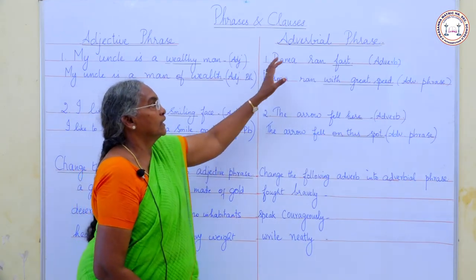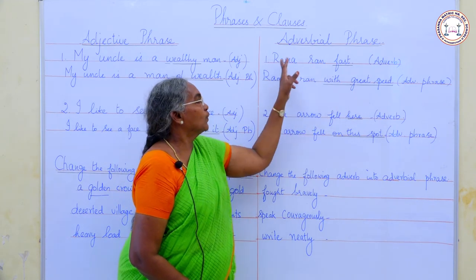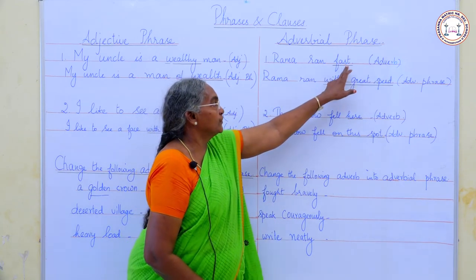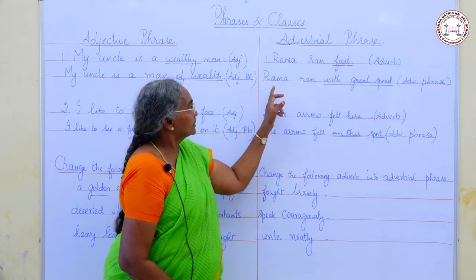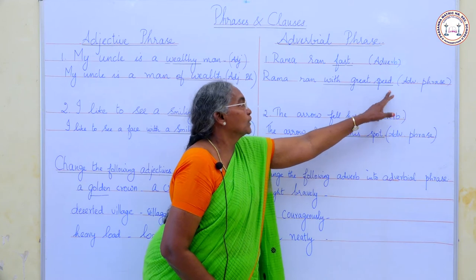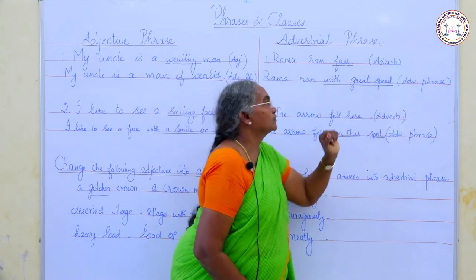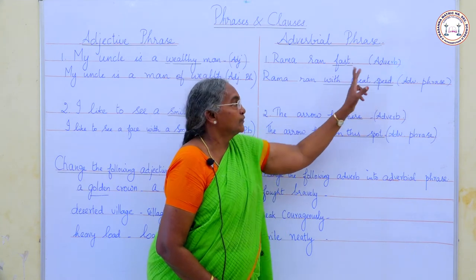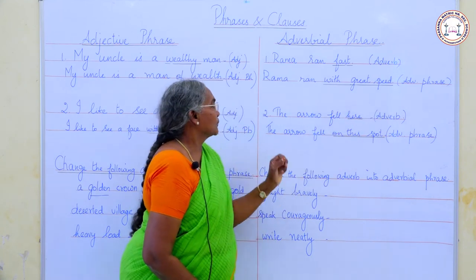Now we shall learn about adverbial phrase. 'Rama ran fast.' How did he run? 'Fast.' Fast is the adverb — it is a single word qualifying the verb 'ran.' Now, 'Rama ran with great speed.' This group of words qualifies the verb 'ran,' so 'with great speed' is the adverbial phrase. If a word qualifies a verb, it is an adverb. If a group of words qualifies the verb, it is an adverbial phrase.